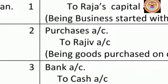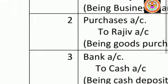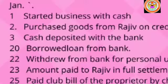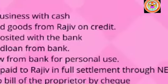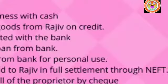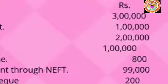Write the narration: being business started with cash. Transaction Jan 2: when the proprietor purchases goods from Rajiv on credit, ₹1 lakh.